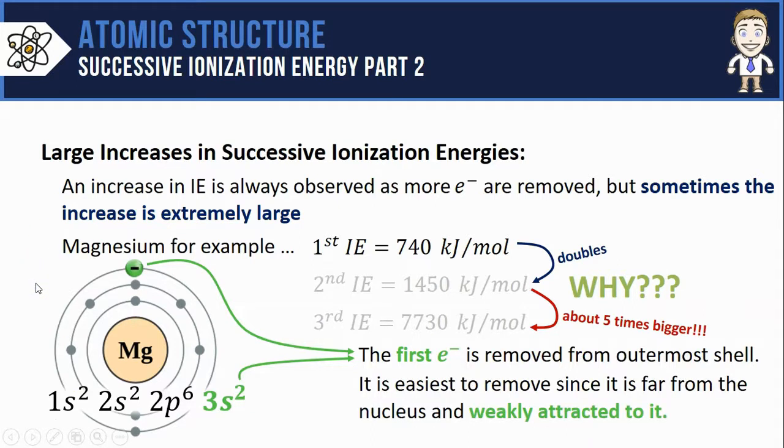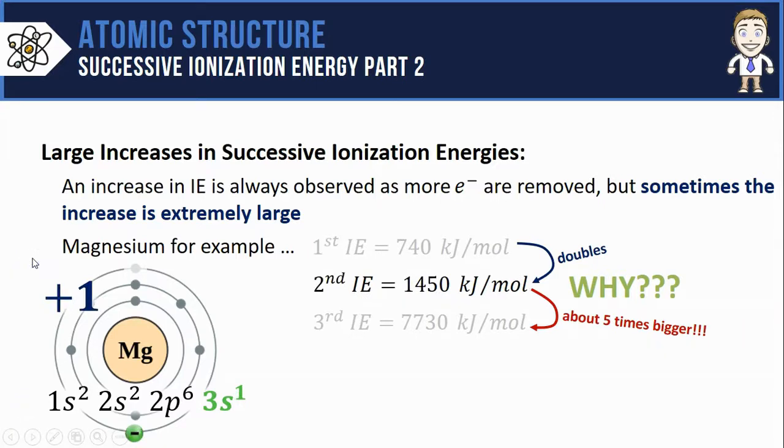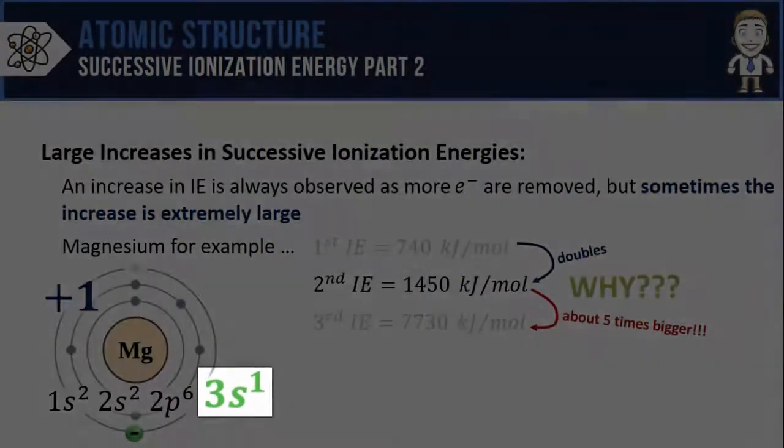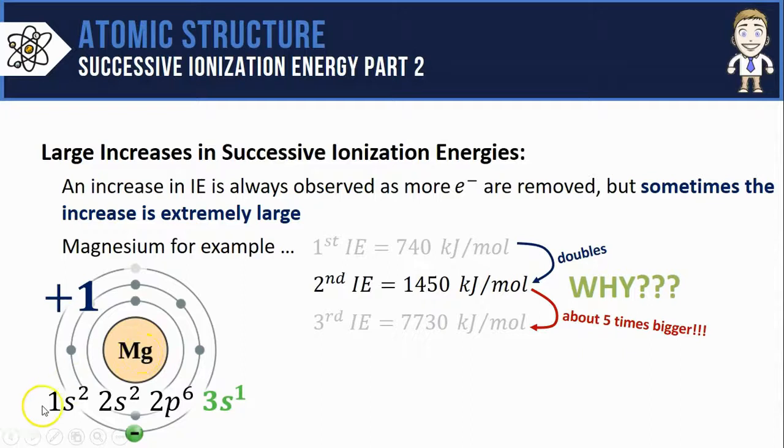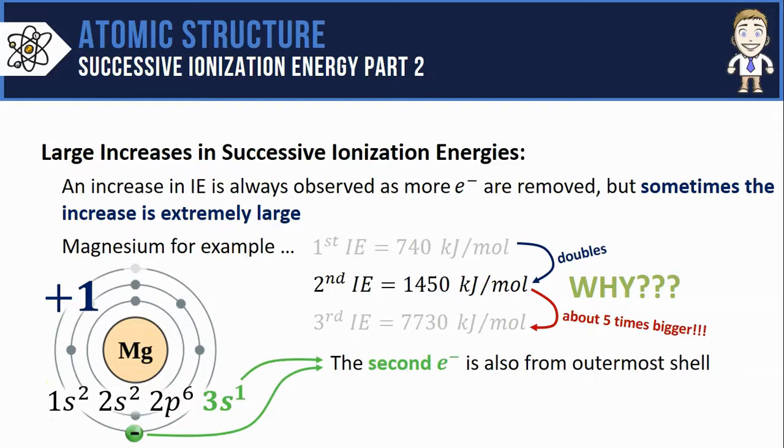That makes it the easiest to remove since it's farthest from the nucleus and fairly weakly attracted to it. After that electron has been removed, my configuration is no longer 3s² but now 3s¹, and my atom has a +1 charge. When we remove that second electron from the 3s¹, it's also coming from the outermost shell...